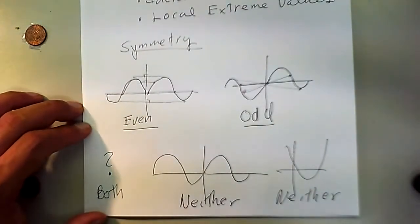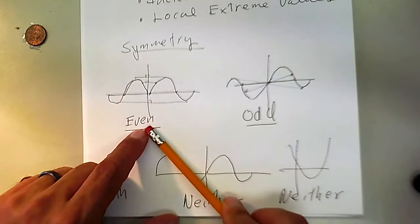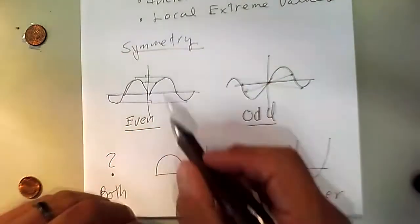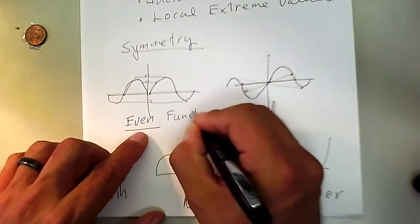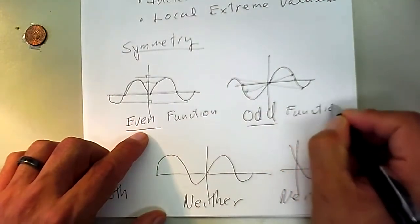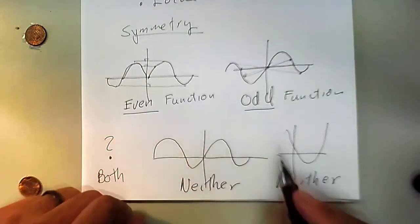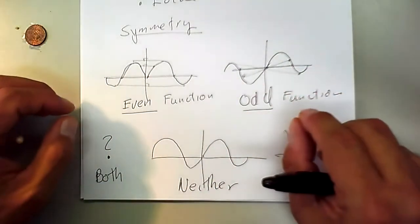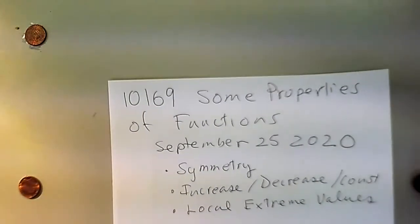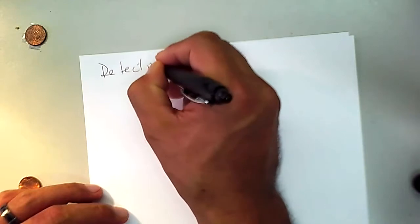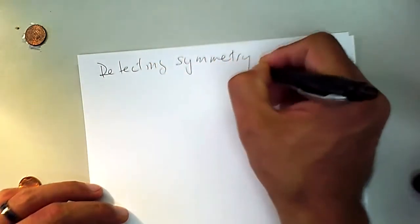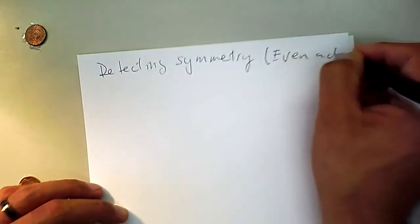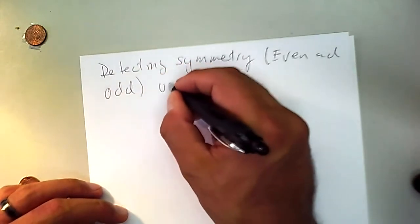There are many kinds of symmetry. By the way, even refers to the function — it is an adjective applied to the function, not to the symmetry. So we have even function and odd function. We have to be able to transfer this to symbols, to algebra. So how do we detect symmetry using algebra? Specifically, even and odd functions using algebra.